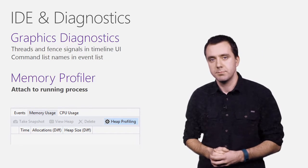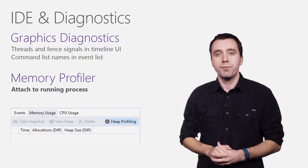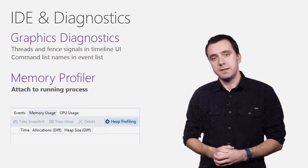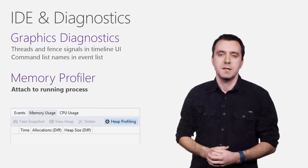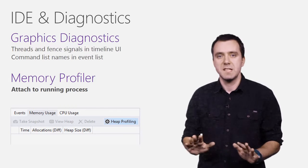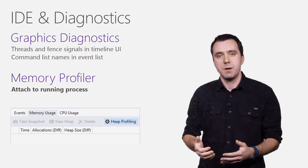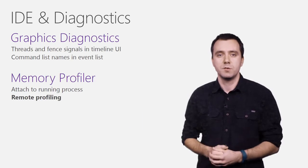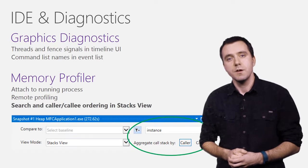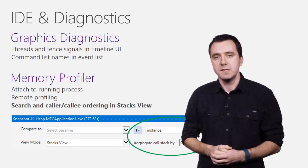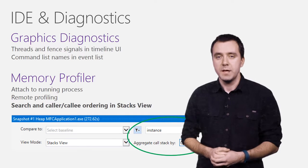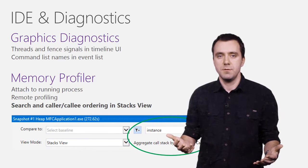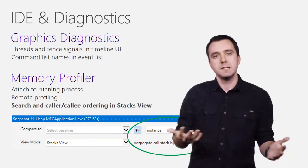For the memory profiler, starting with RTM, you can profile your app memory while debugging your code. To start the profiler, though, requires you to restart the debug session. In Update 1, this is not needed anymore, and you can attach the memory profiler to an already running debug session. Remote profiling is also now supported. And when looking at the memory snapshot in Stacks View, you can now search for a specific function name, as well as change the orientation of the view from a callee to a caller view.